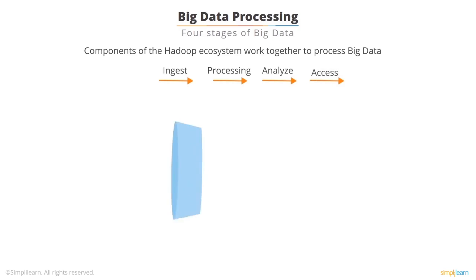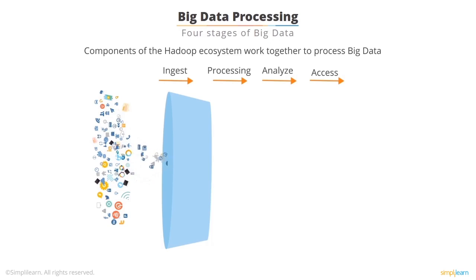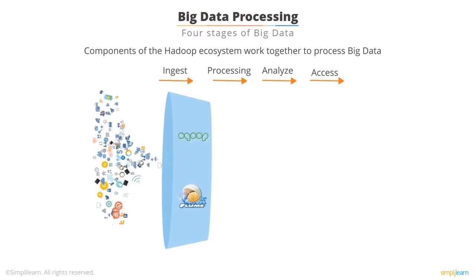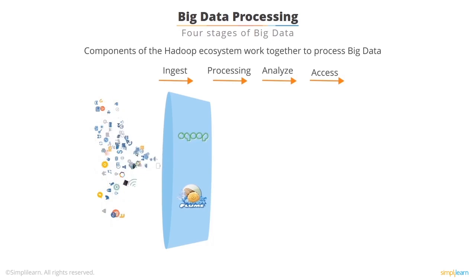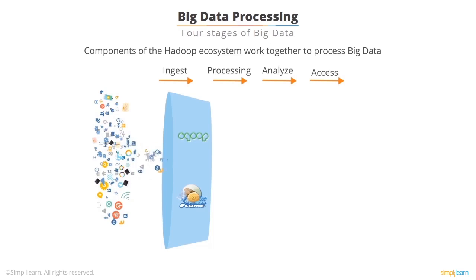The first stage of big data processing is Ingest. Data is ingested or transferred to Hadoop from various sources such as relational databases, systems, or local files. Sqoop transfers data from RDBMS to HDFS, whereas Flume transfers event data.